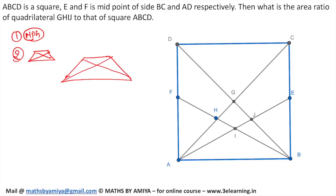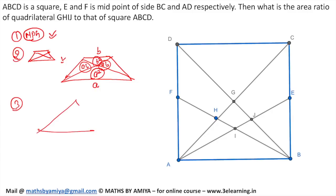If you have a trapezium or trapezoid, this one is A, this one is B. So the area ratio is nothing but A squared, B squared, AB and AB. This one is nothing but the area ratio. If the base is 1 or 2, then the area ratio is 1 or 2.